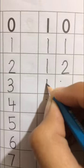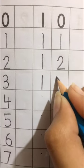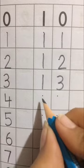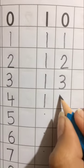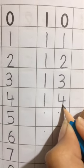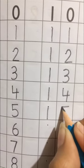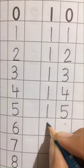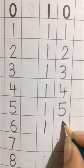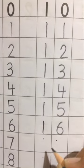Ab 12 ke baad kya aata hai? 1, 3, 13. 13 ke baad 14. So, 1, 4, 14. Next is 15. 1 and 5 kya ban gaya? 15. Then, 1, 6, 16.